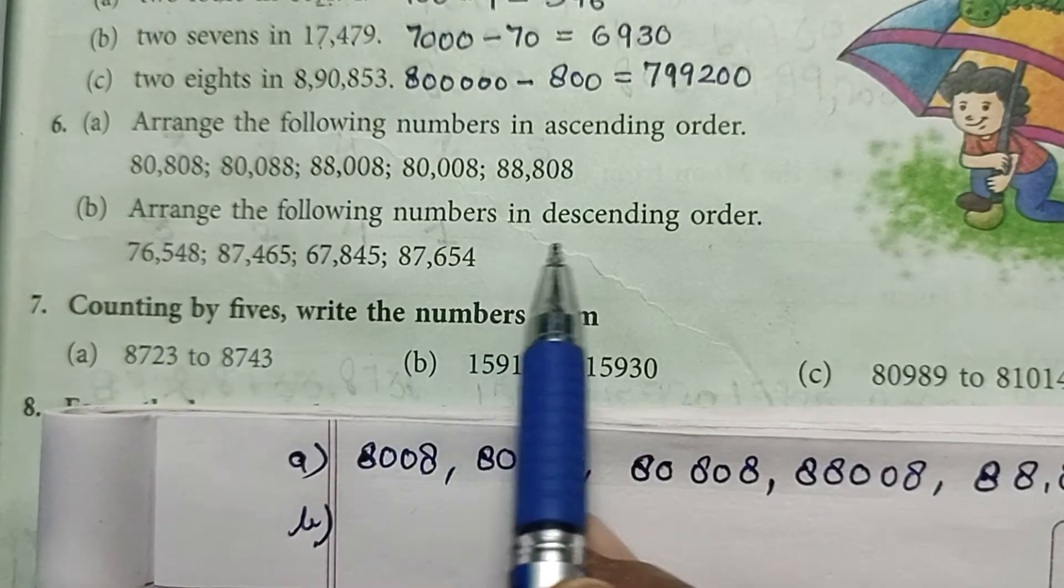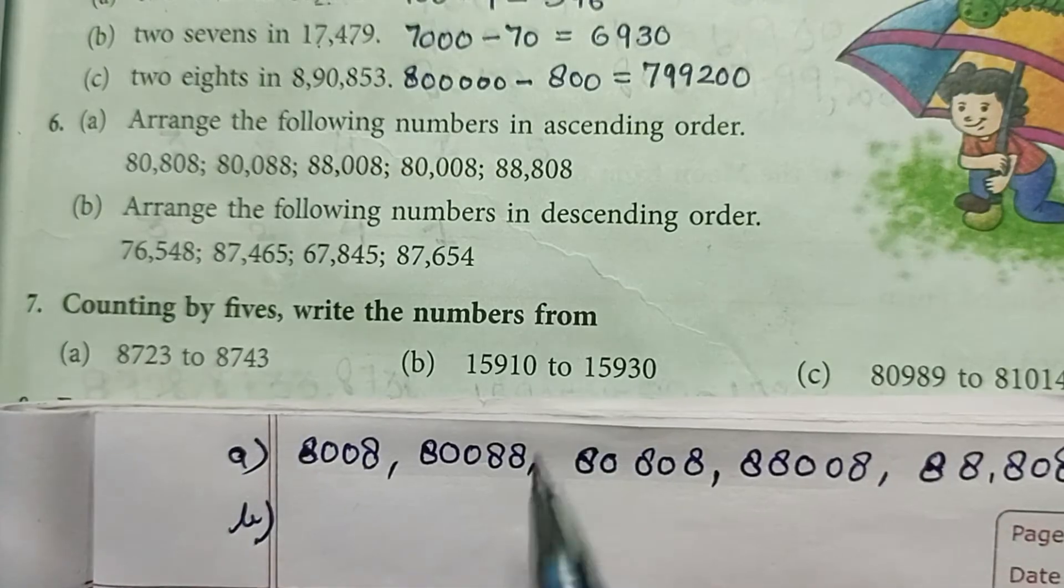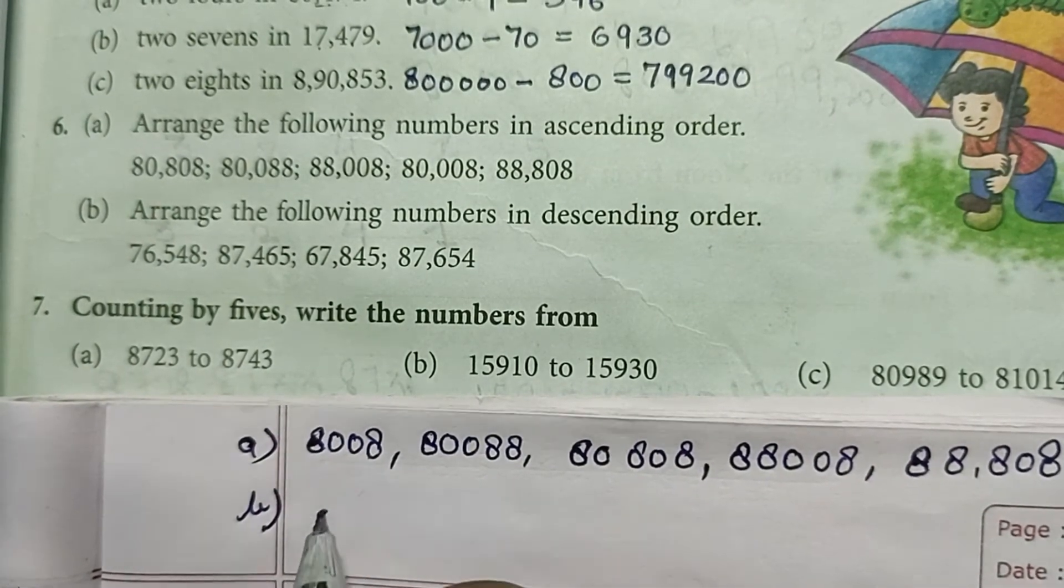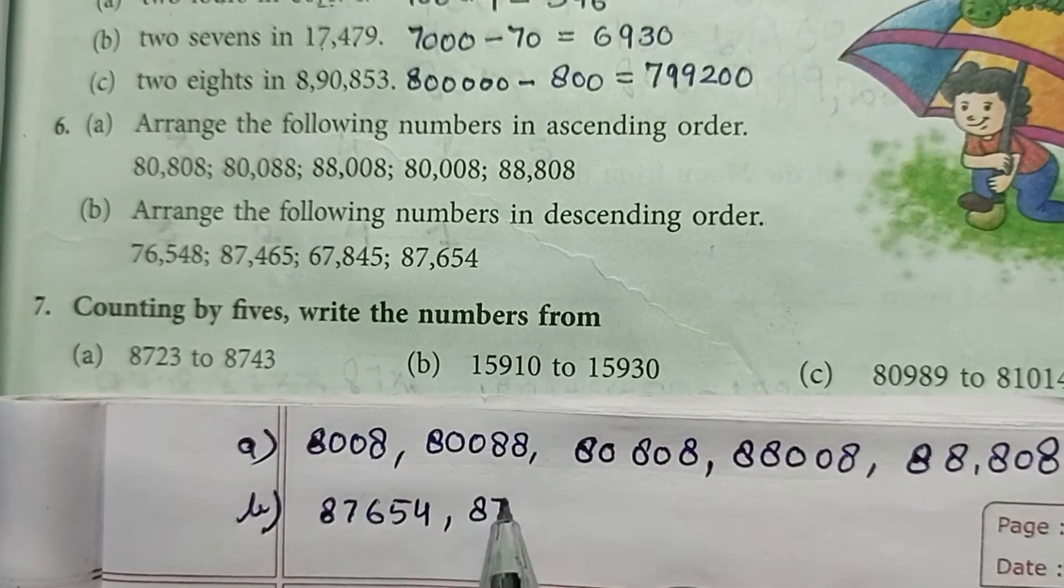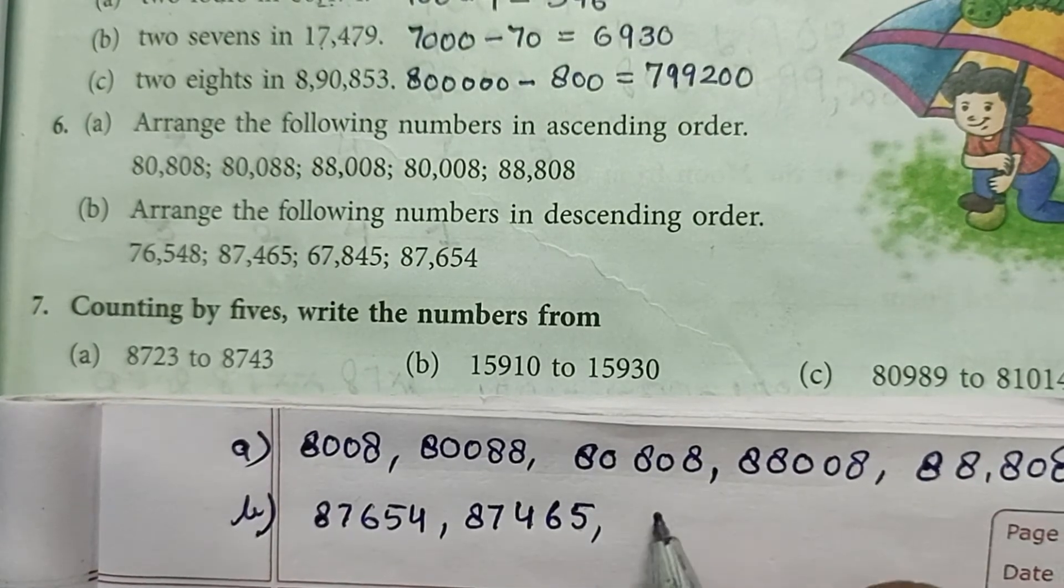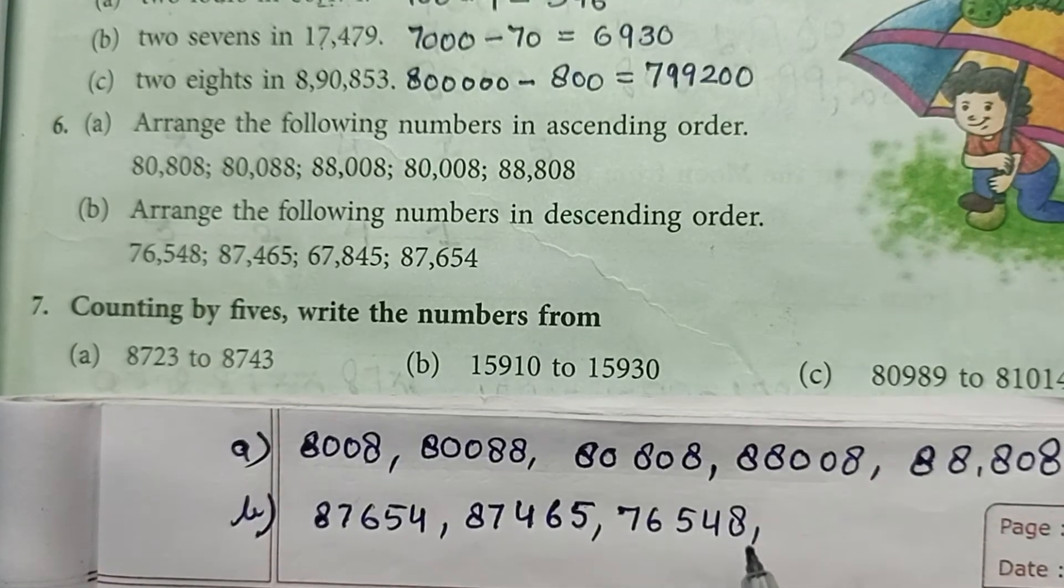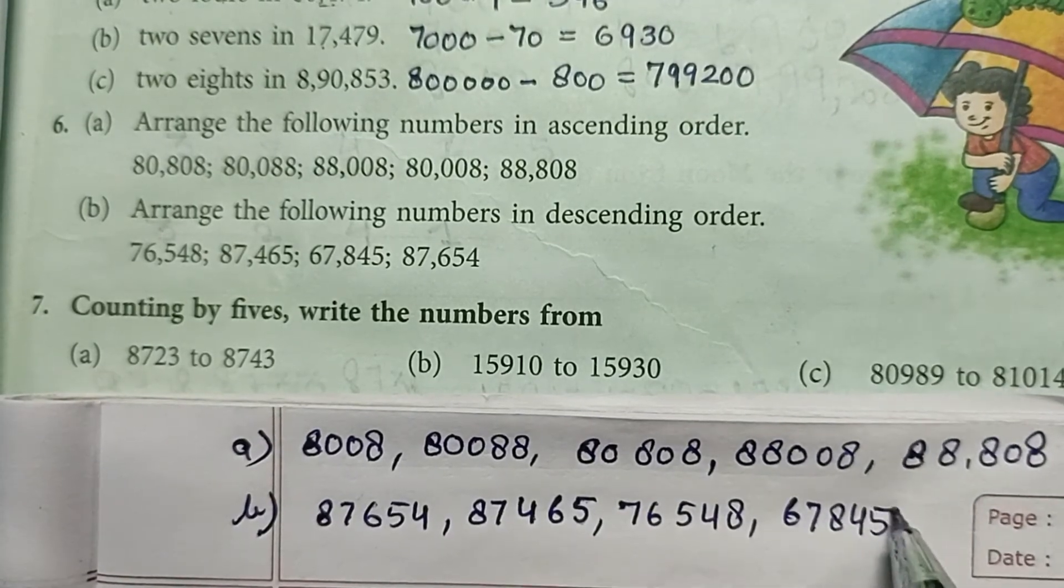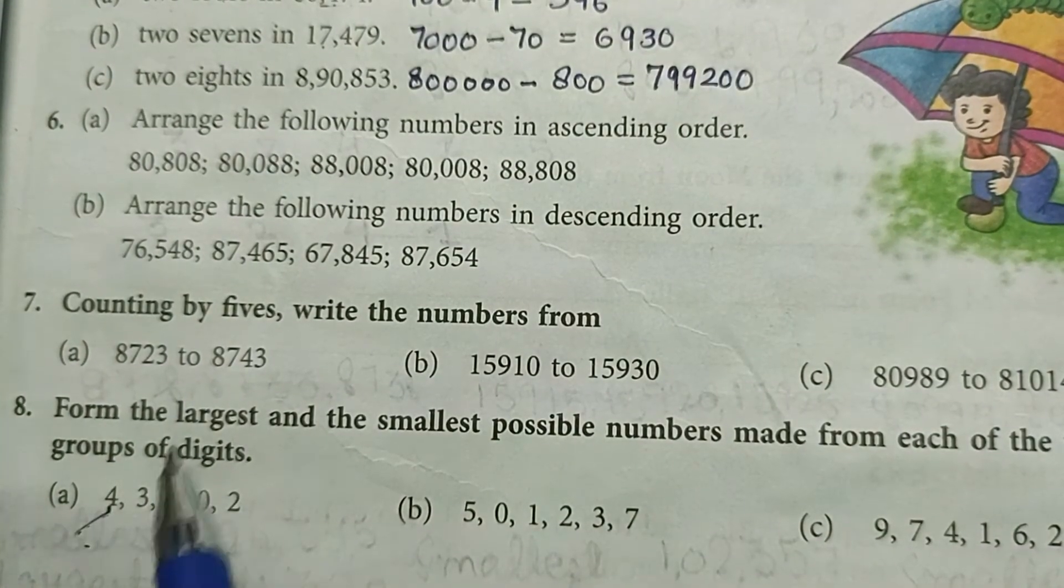Part B: arrange the following numbers in descending order. Descending means from greatest to lowest. So first we write the greatest number: 87,654, then 87,465, then 76,548, and at last 67,845.